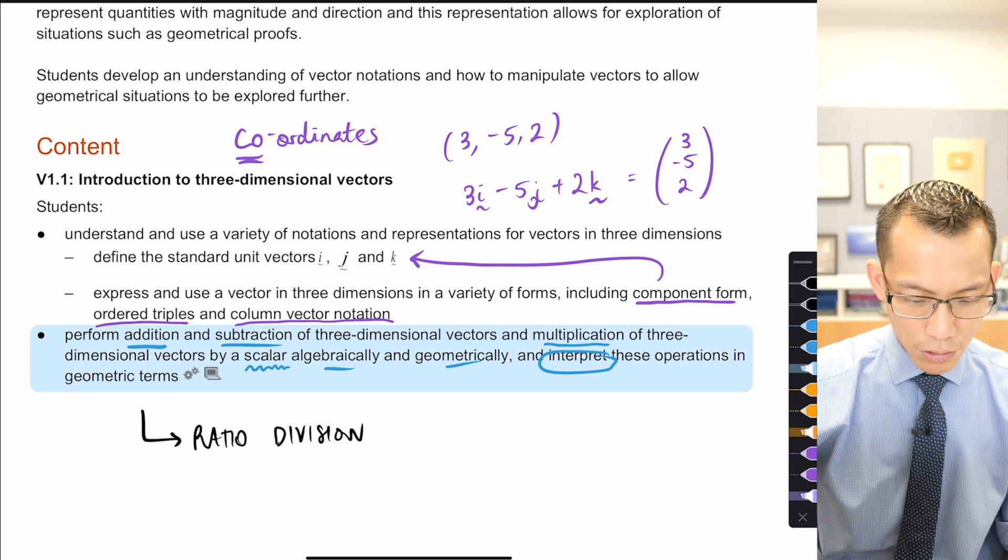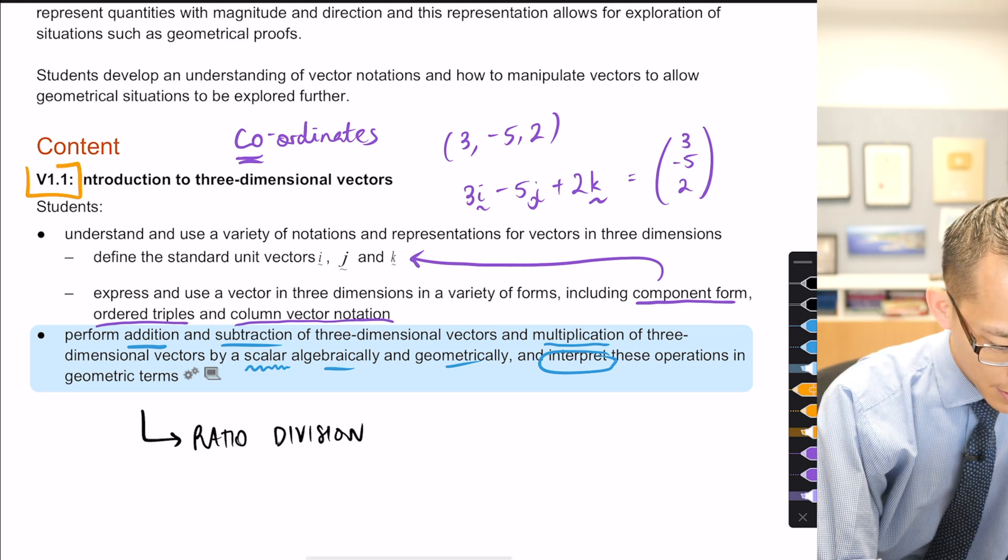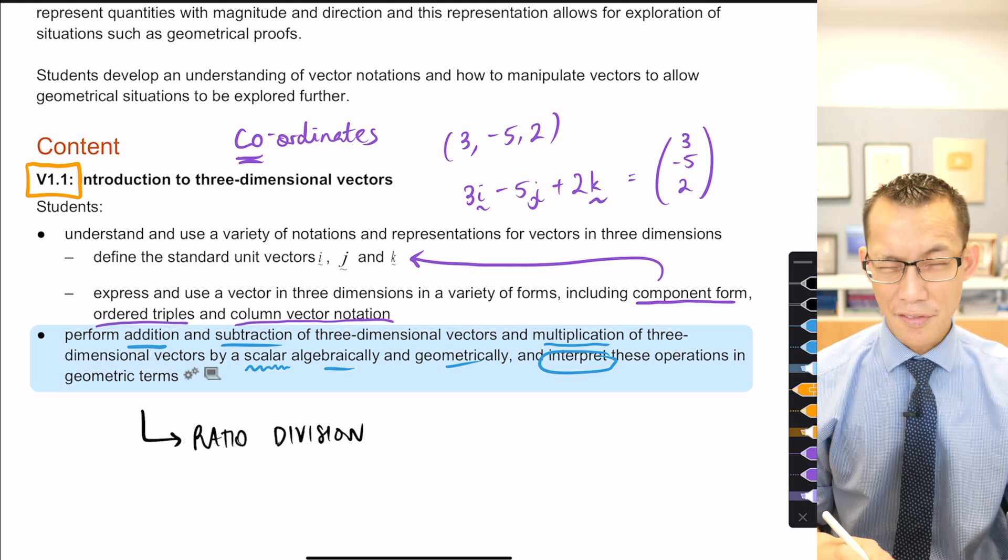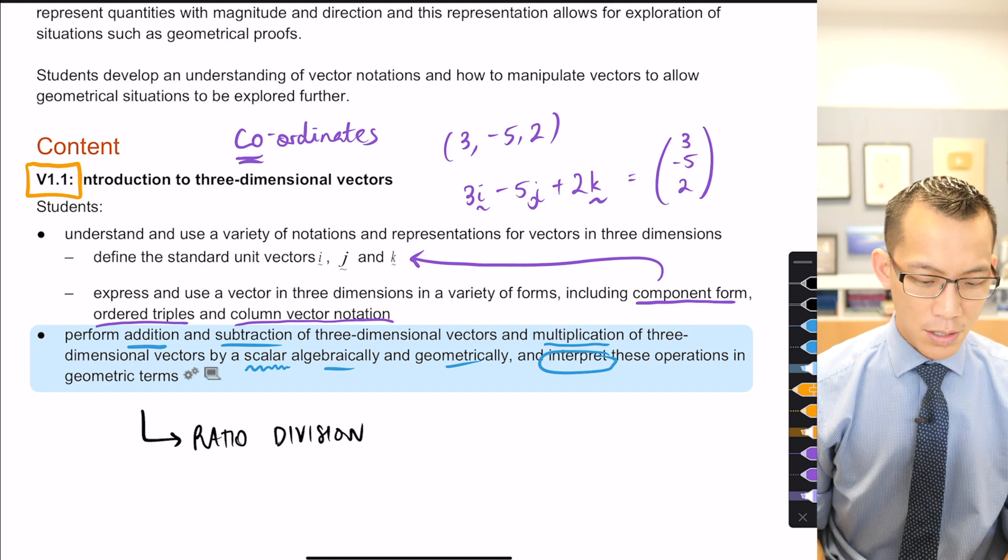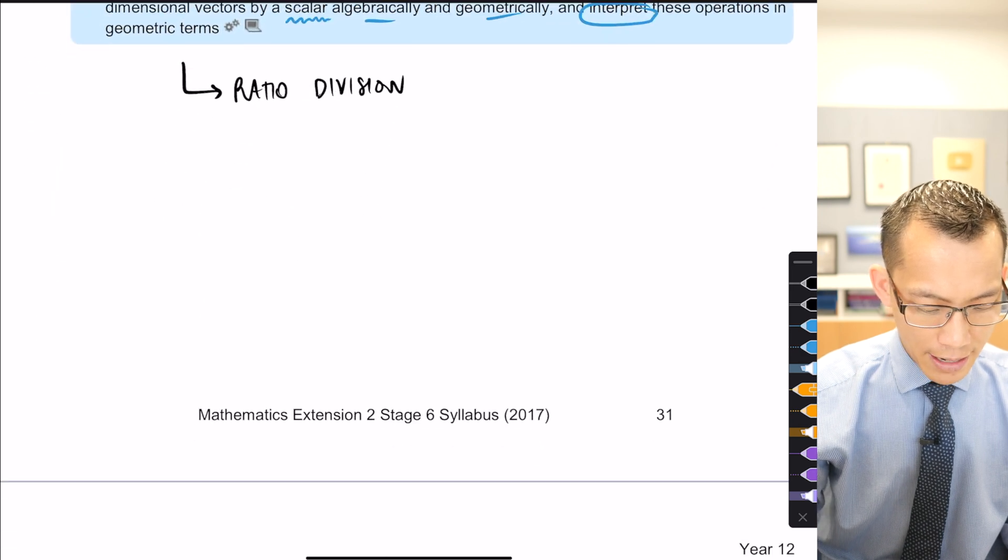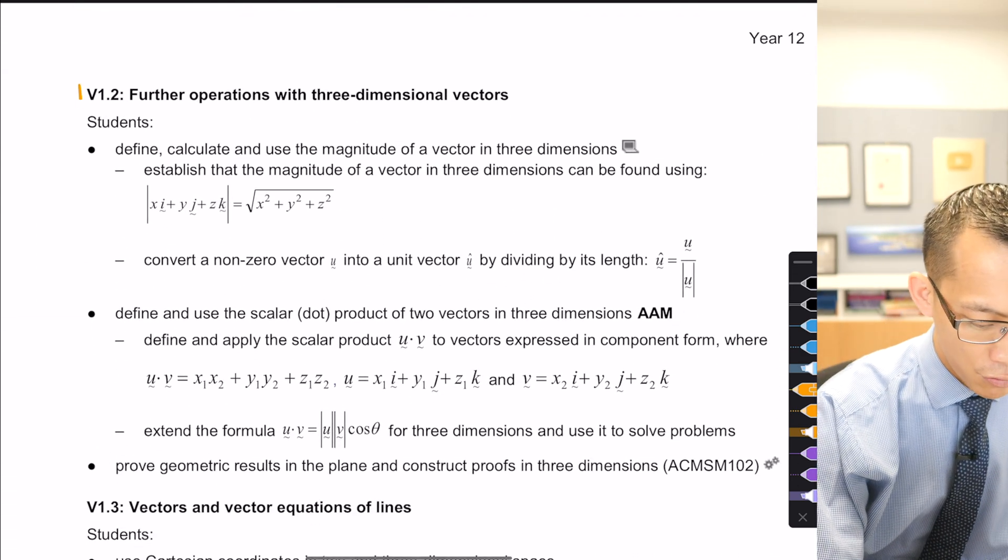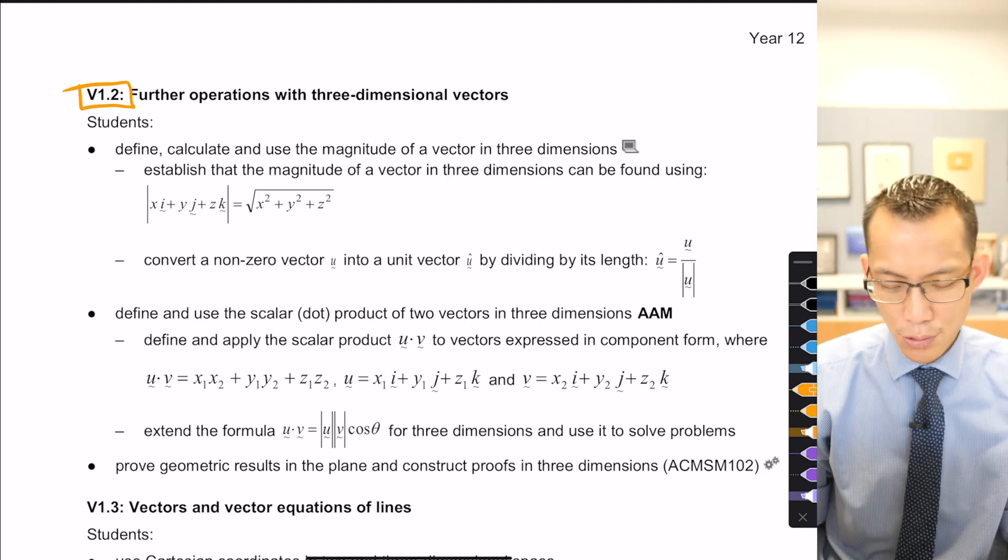So this is, if you have a look just at the top here, this is the structure of the syllabus. Within a topic like 3D vectors, so that's the V in V1.1, there are little subsections as well. So this was just the introduction. We've actually already, if I go over the page, we've already gone into V1.2 further operations with three-dimensional vectors. I just didn't tell you that we were.